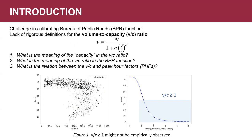This research mainly focuses on the Bureau of Public Road function, that is the BPR function. With this formula, U_f is the free flow speed, C is the capacity of the link, and alpha and beta are the parameters to be calibrated.